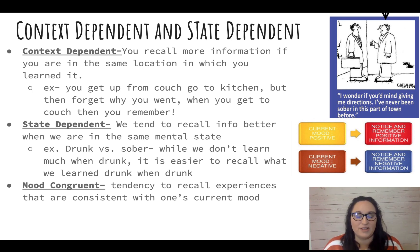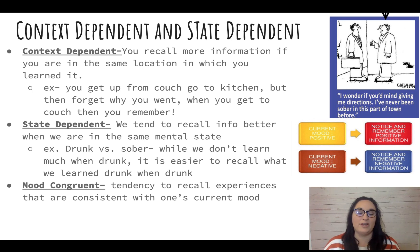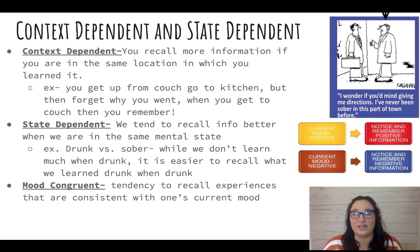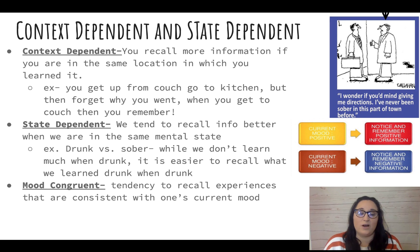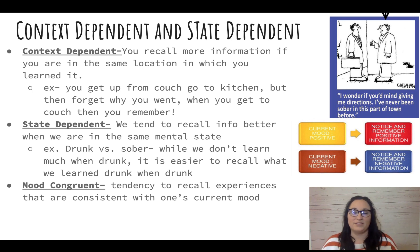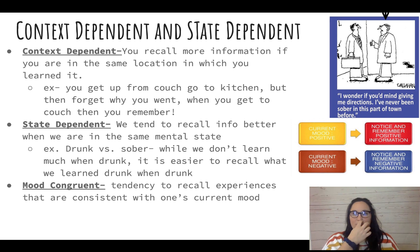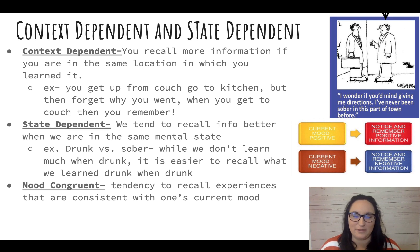Mood-congruent memory also comes up a lot. If you are in a good mood, it's easier to recall memories that are congruent with that good mood — happy, positive memories. If you are in a bad mood or sad, you will recall more sad events and remember more sad things.